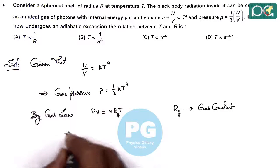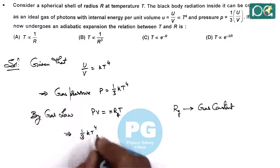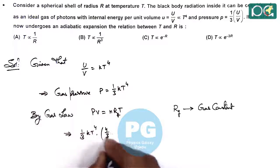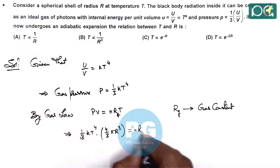If we substitute this 1 by 3 K T to the power 4, and the volume of the spherical shell, we can write 4 by 3 pi R cube equals N RG T.